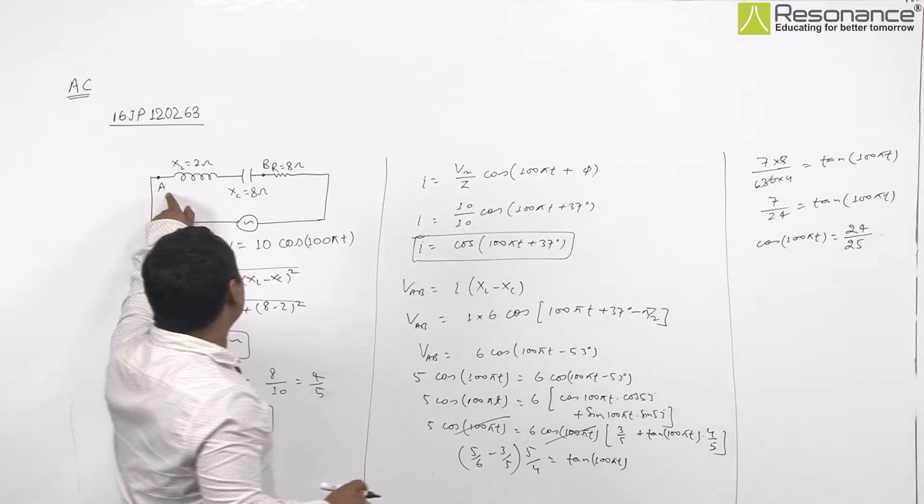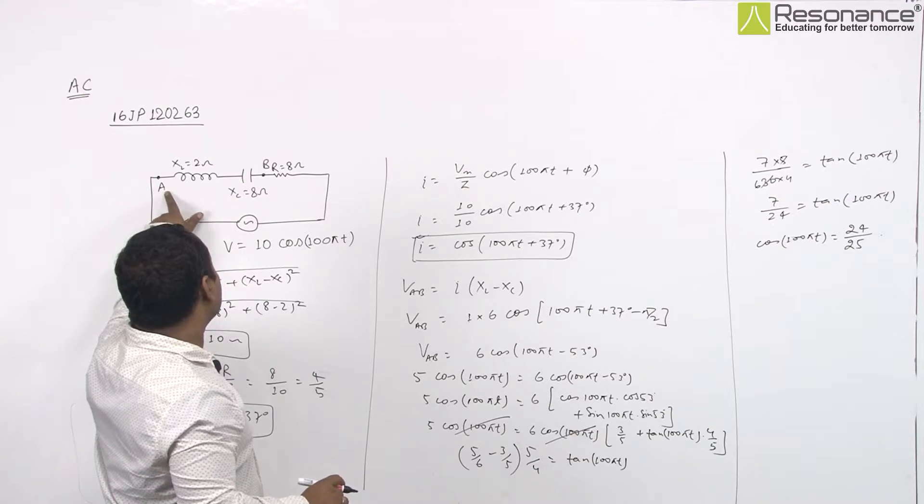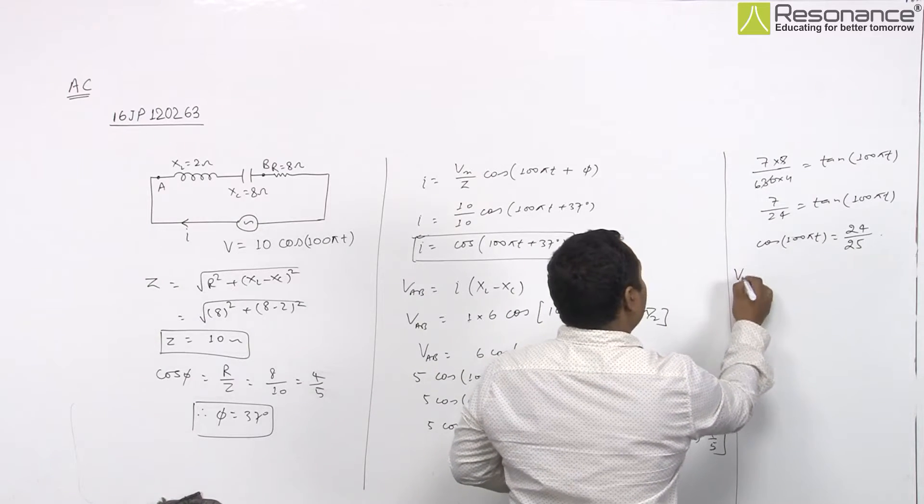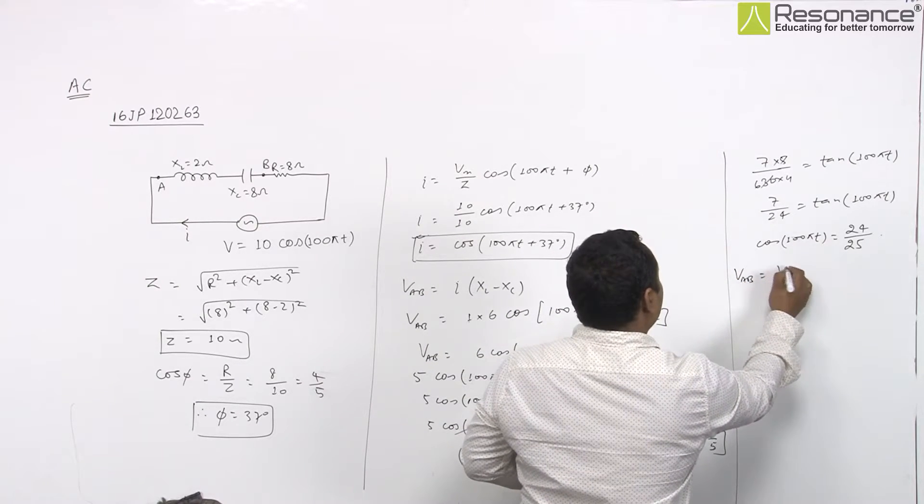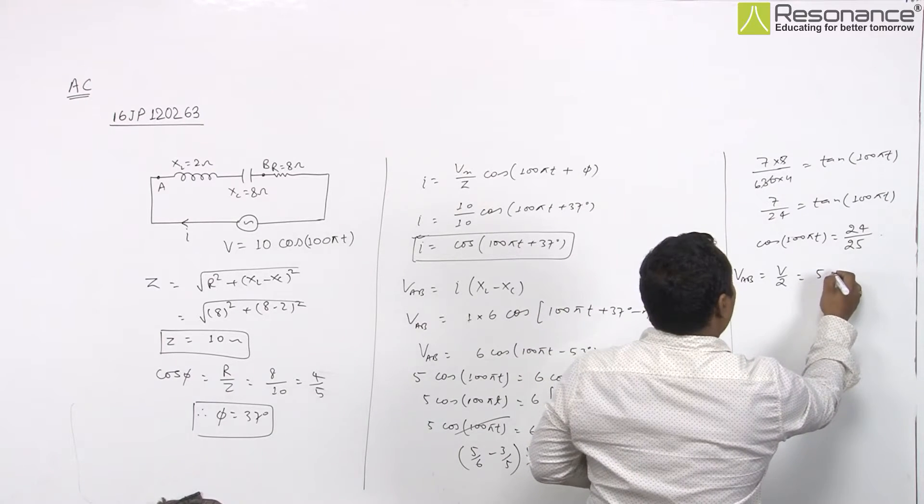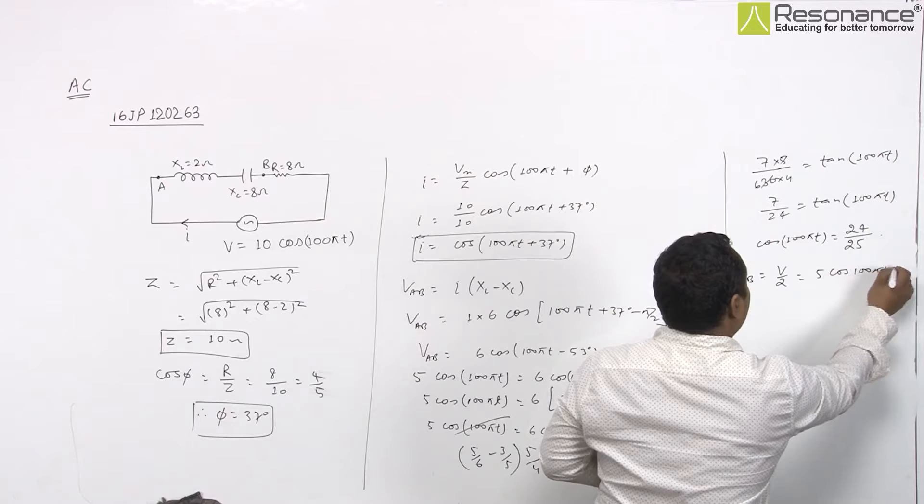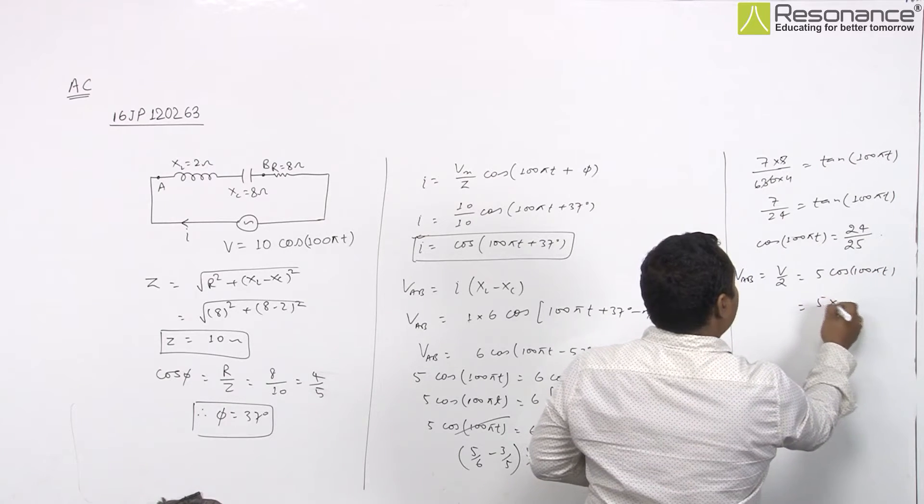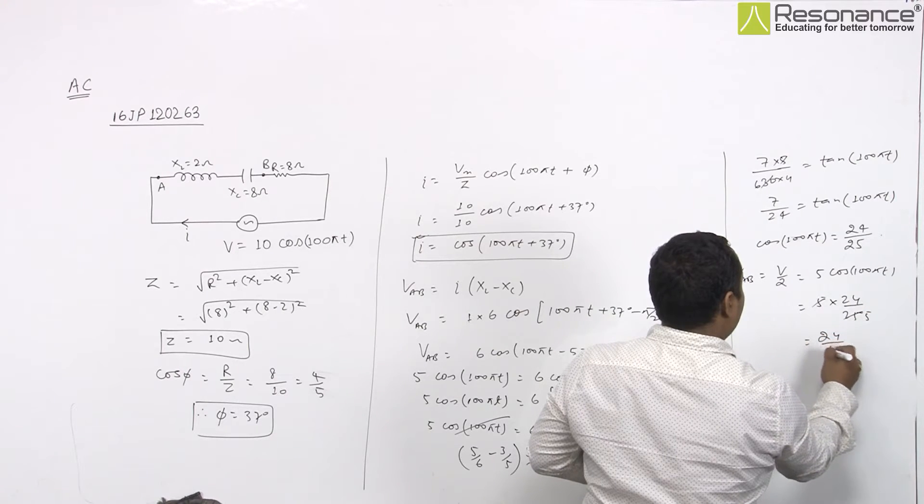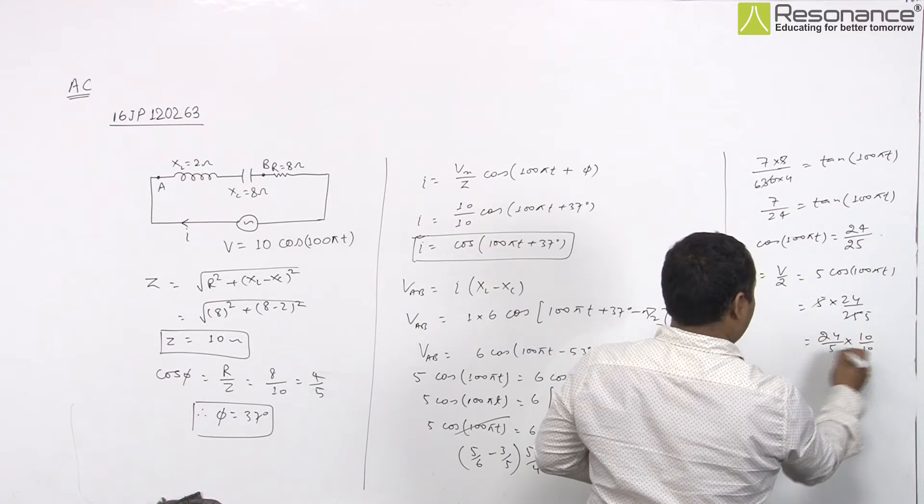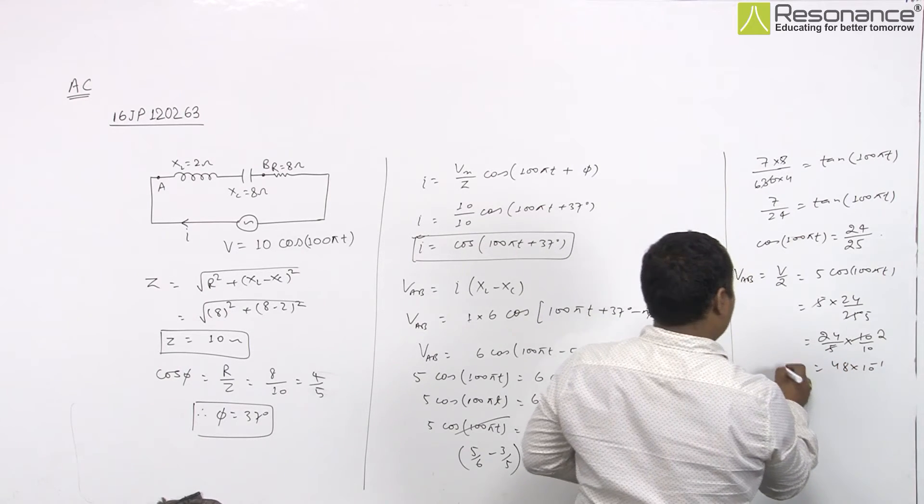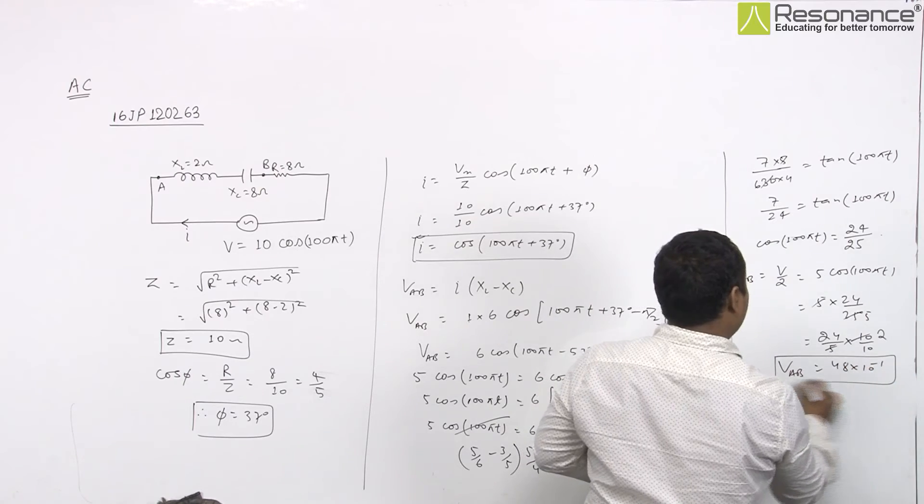Now you see, we have to find potential difference between A and B, which will be simply half of this. So VAB will be our final result, V upon 2, that will be 5 multiplied with cos of 100 pi T, which is equal to 5 into 24 upon 25. The result will be 48 into 10 power minus 1, that is our desired result, VAB.